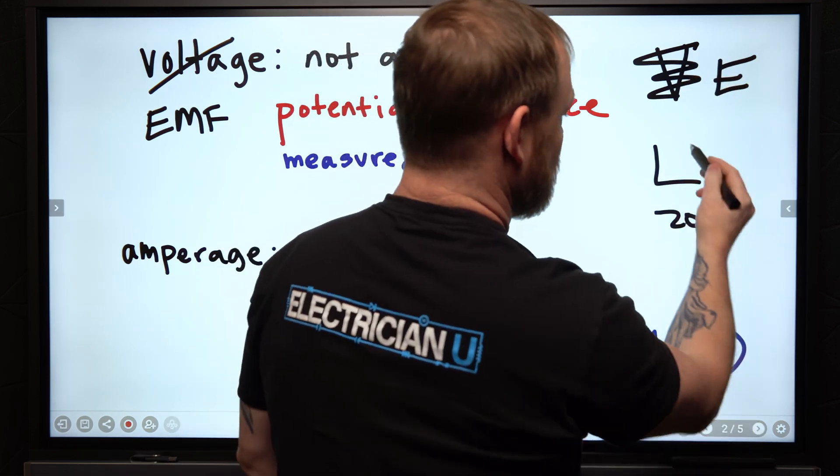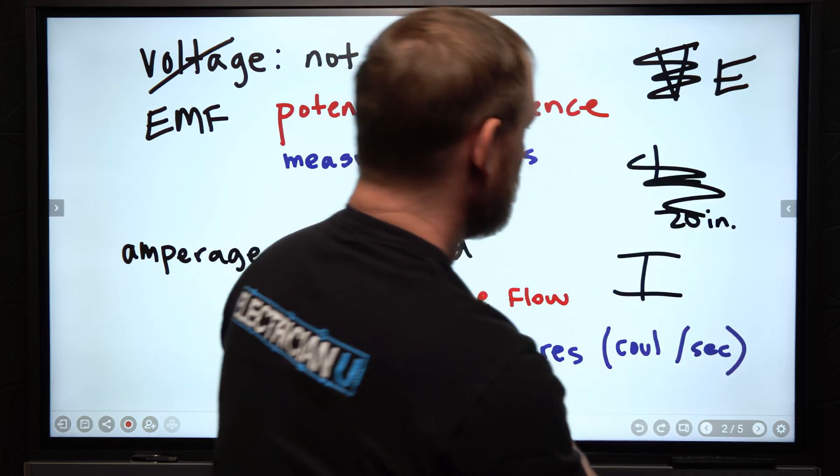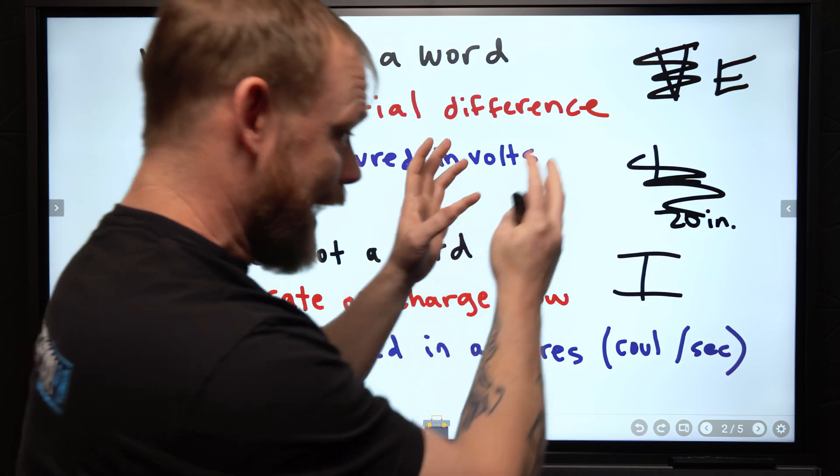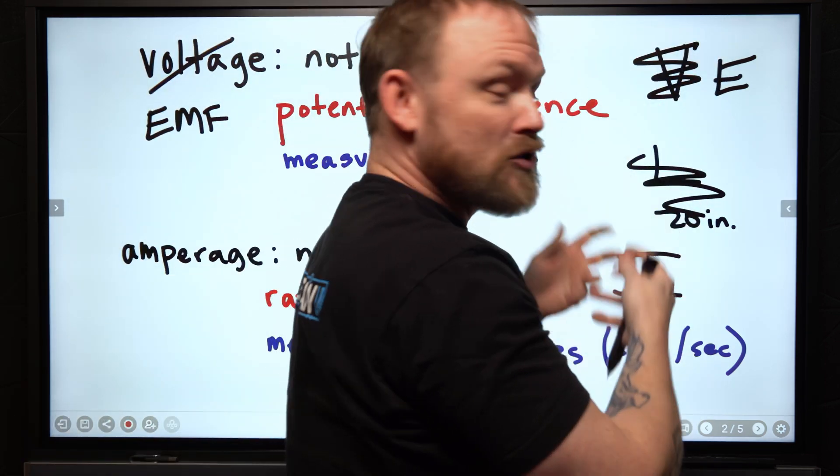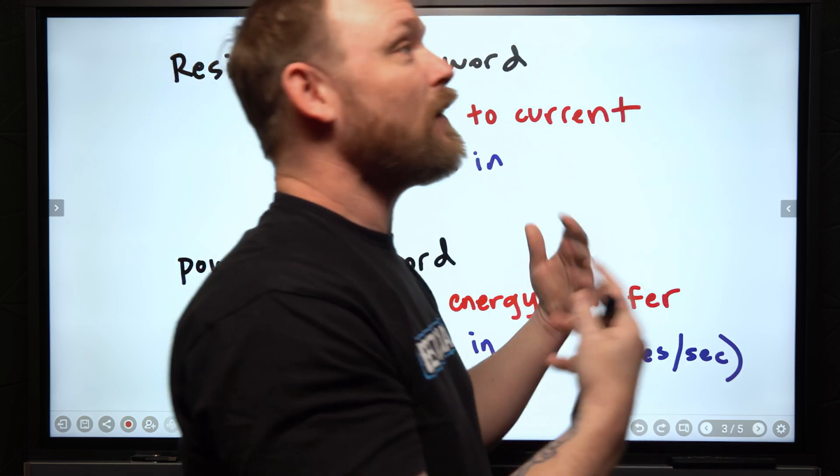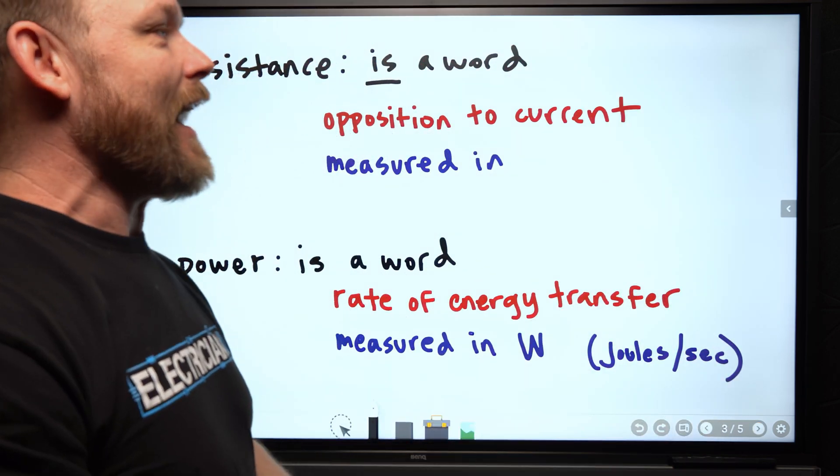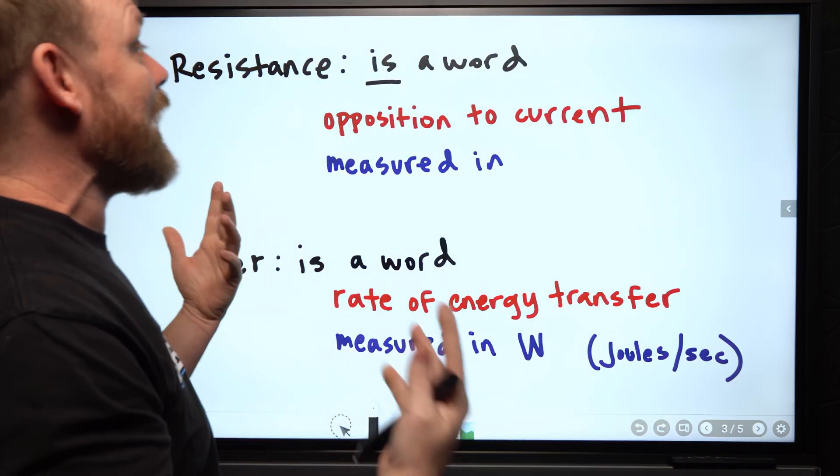So we use E for voltage. We use I for amperage. I is measured in A. E is measured in V. You can't have V measured in V and A measured in A. That's just an inaccuracy.